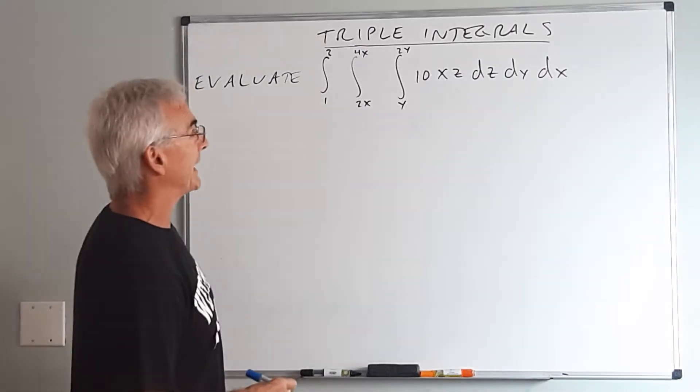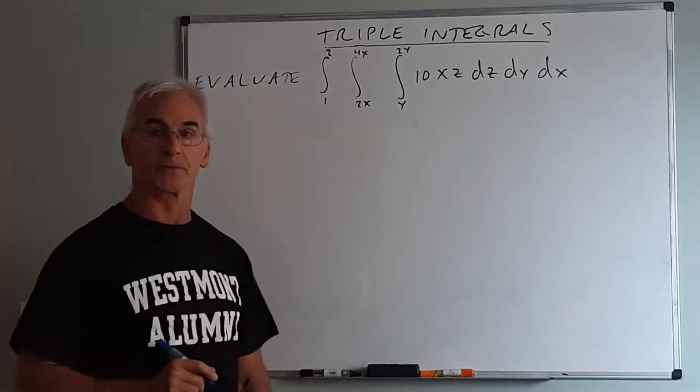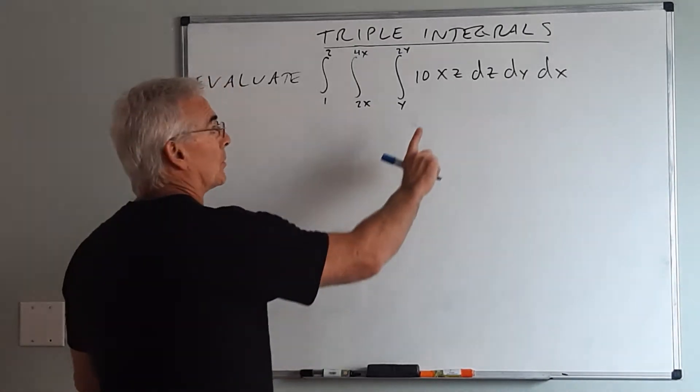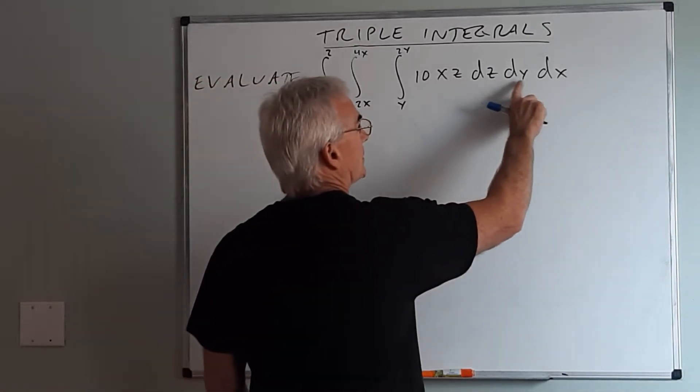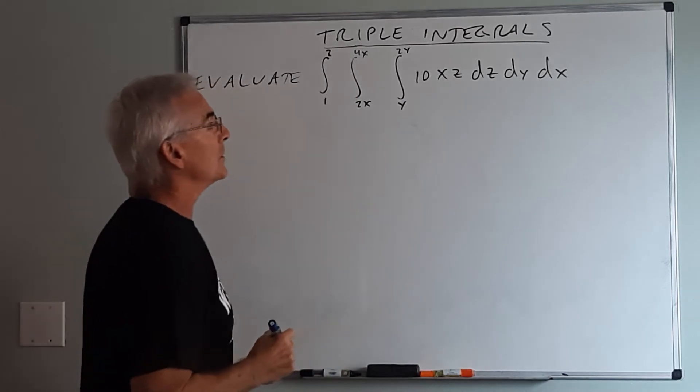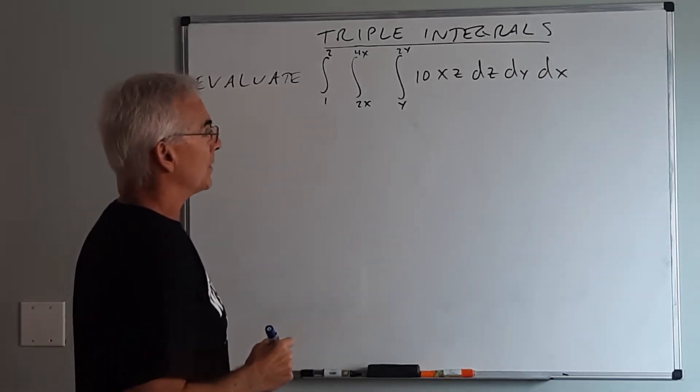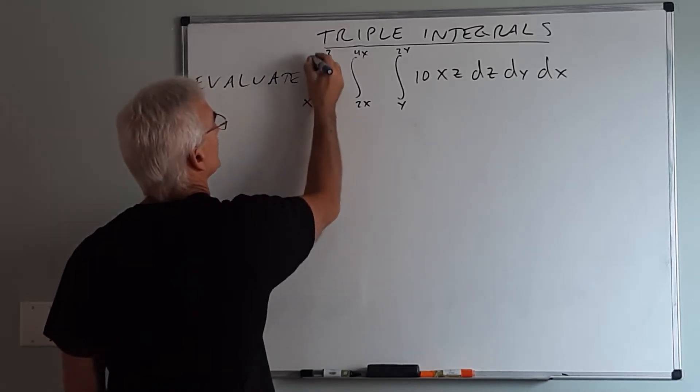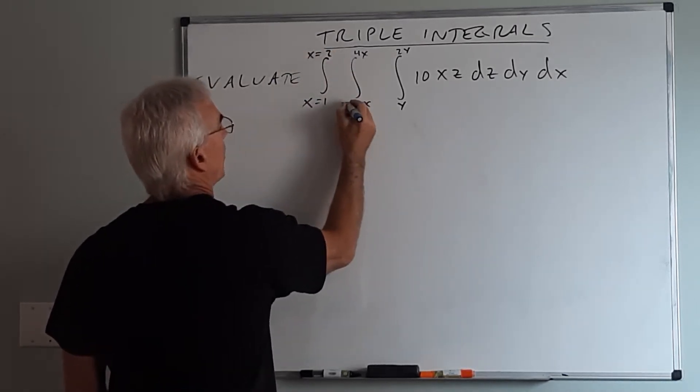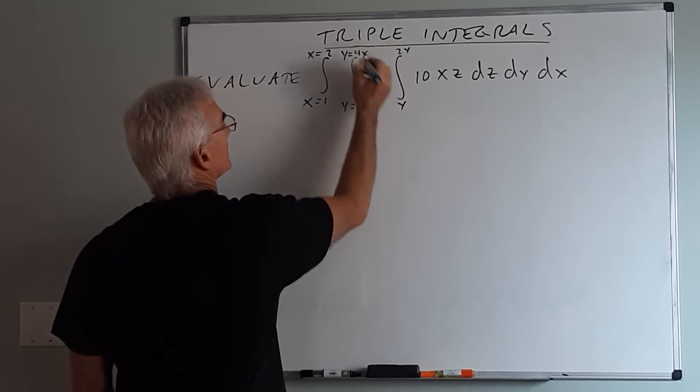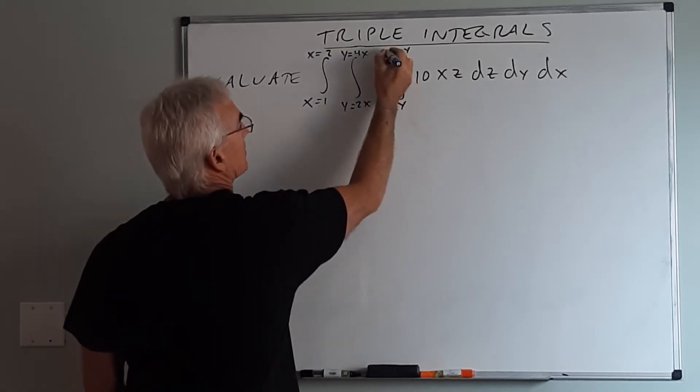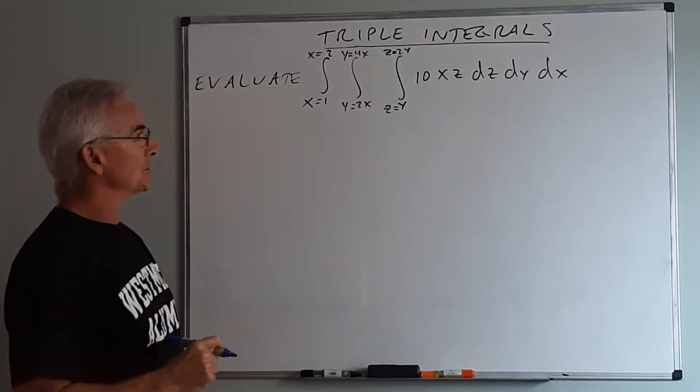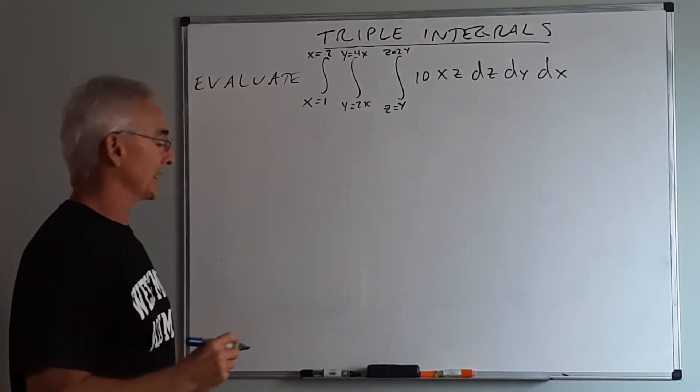I actually want to mechanically walk you through the evaluation of the triple integral so we can see what they're actually used for. Like before, the dz, the dy, and the dx tell me the order of the integration I'm going to perform. So it might be a good idea to actually put the variable in here. This is x equals, this is y equals, this is z equals. It's implied already by the setup of the problem, but sometimes it's easier to do this to remember what order you're doing things.